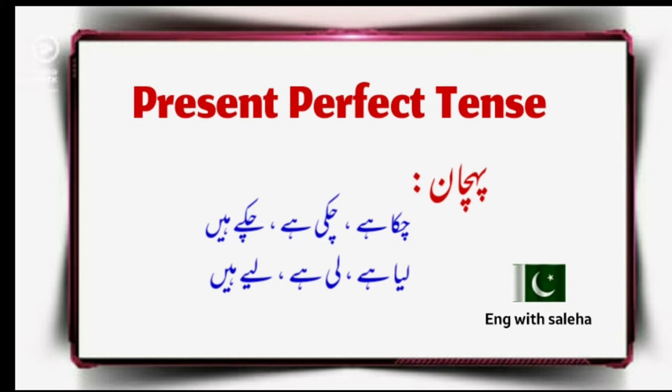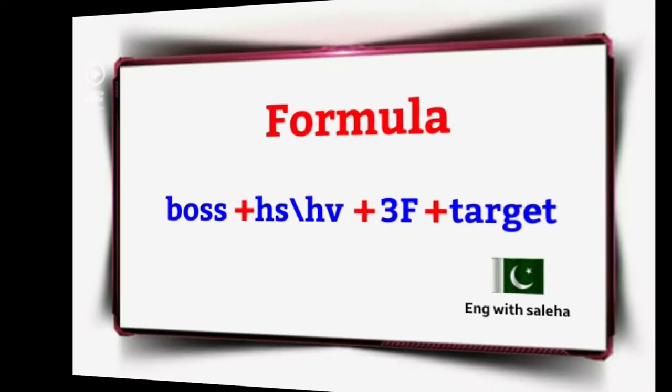Perfection — we use that word for perfect things, like Perfect Personality, Perfect Idea, Perfect Point. Present Perfect Tense aspects can be used for actions which are completed in the present time — chuka/chuky. This is the formula.